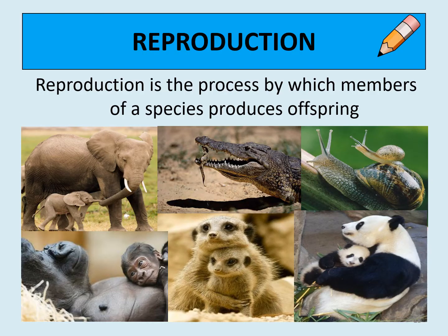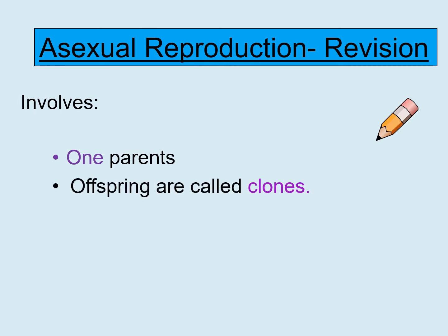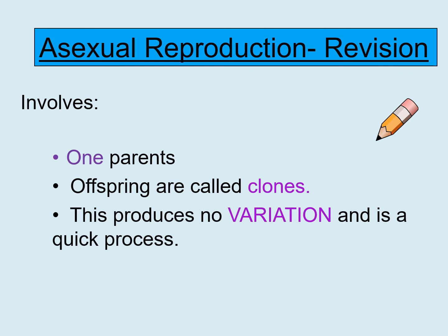Reproduction is the process by which members of a species produce offspring. Without reproduction, species would go extinct. There are two types of reproduction. Asexual reproduction only involves one parent. It produces genetically identical offspring which are clones of the parent. There is no variation between offspring and parents, so if one gets a disease the other will too, and it is a very quick process.